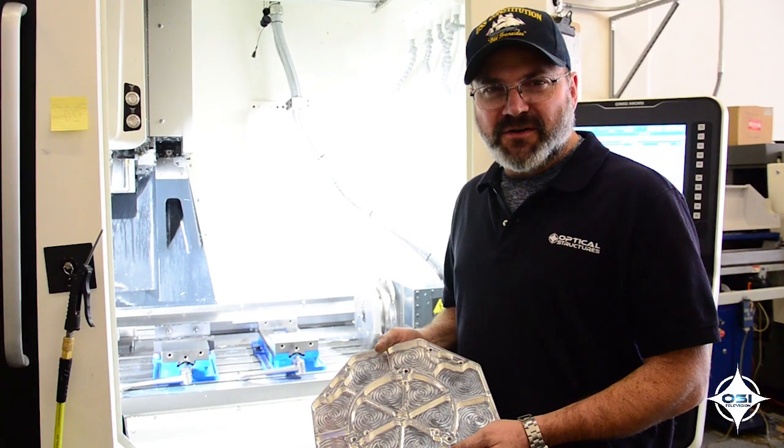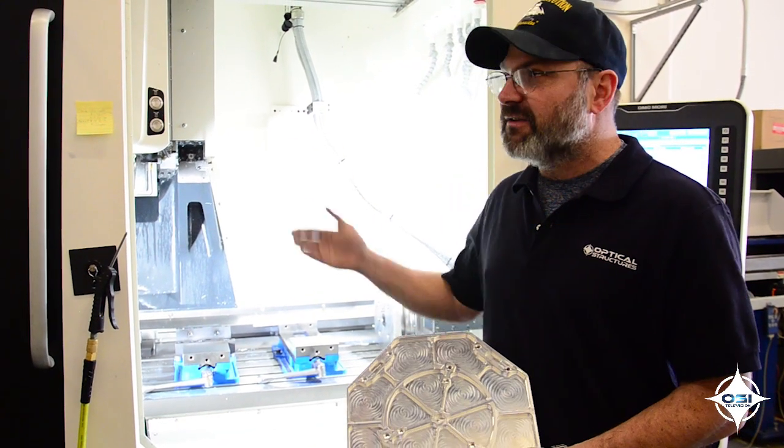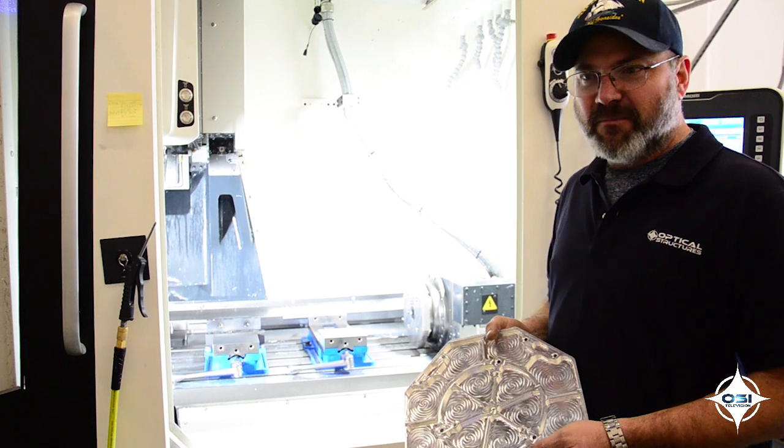All of the parts for our telescopes are made here in our own shop on our state-of-the-art CNC machining equipment, such as this Mori Seiki NMV 1500 DCG.